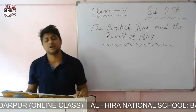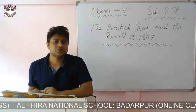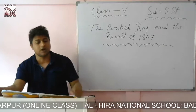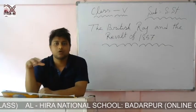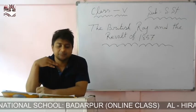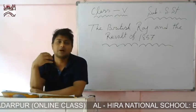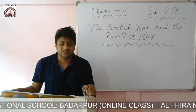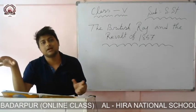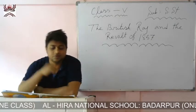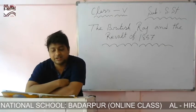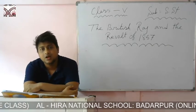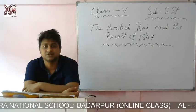The Mughal emperor Jahangir gave permission to the British to establish their factories in many places in India. From Surat, they established factories in many other places. The company added Chennai, Kolkata, and Mumbai as important trade centers.